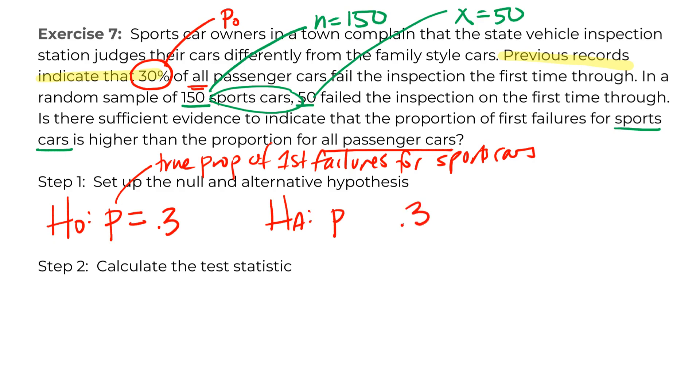Our alternative, still about that true proportion of first failures for sports cars, still about that 30% that all passenger cars that we're comparing to. And here's where we look and we see indeed we do have a keyword saying we have a direction that we want to be looking at. We think sports cars are more likely to fail, so we'll use a greater than. So basically it's the same as passenger cars, or it's higher than passenger cars.